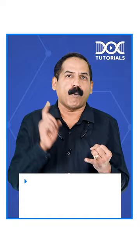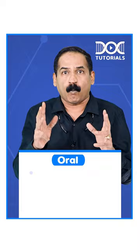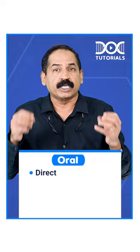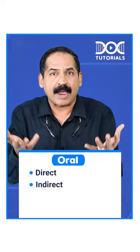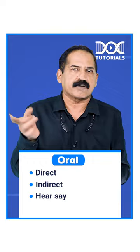Oral evidence is of three types. Number one, direct oral evidence — that means evidence of a person who has seen, heard, or perceived through any of his five senses. Number two, indirect evidence, also known as circumstantial evidence, where a person does not have personal knowledge about the incident, but by his evidence an inference can be drawn. Number three, hearsay evidence — what a person heard through somebody, he comes and tells in the court of law.